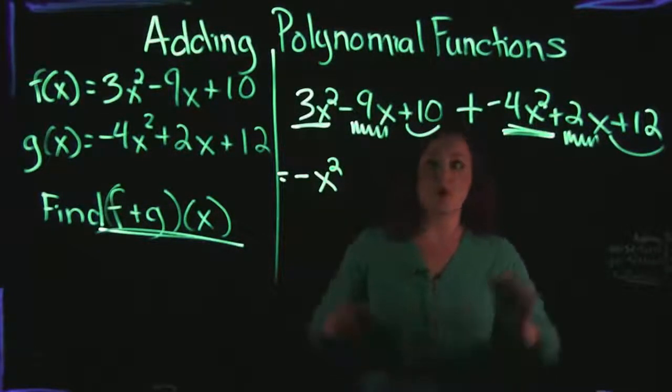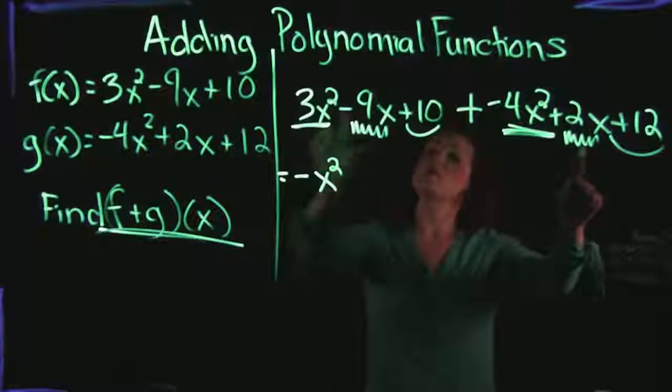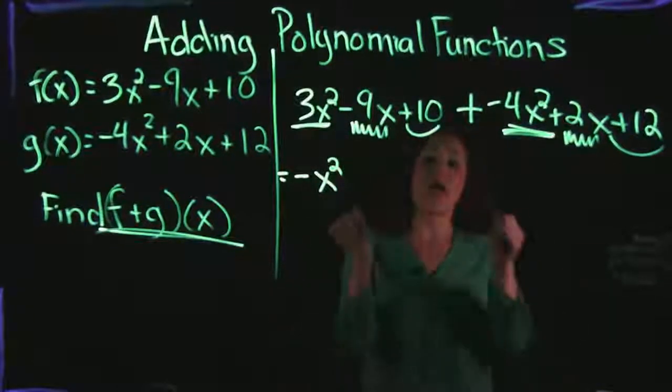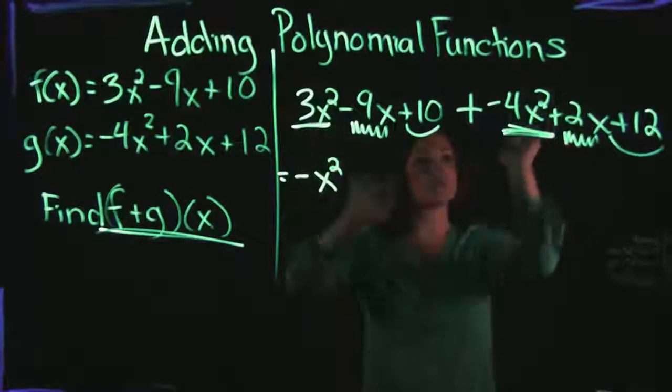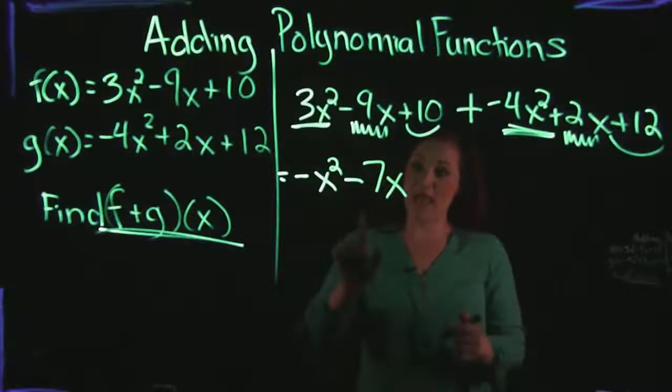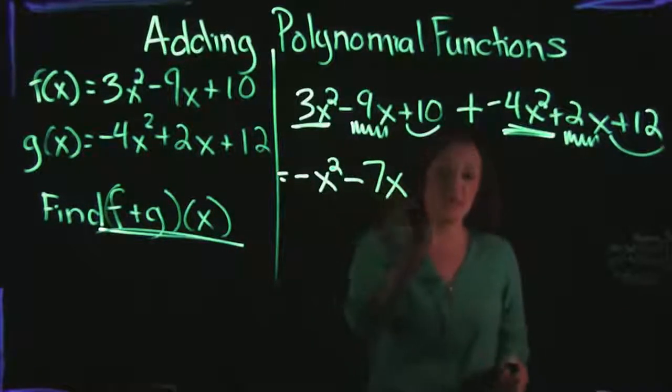Our next set of like terms are our x to the first power. So we would take negative 9x plus 2x. So adding those numbers together, negative 9 plus 2 gives us a negative 7x. So again, add the coefficients, keep the variables.